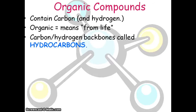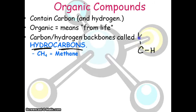Our focus is going to be on specific organic compounds that are important to living things. The backbone of an organic compound is basically called a hydrocarbon — just hydrogen and carbon. The simplest organic compound would be methane, which is nothing more than a carbon surrounded by hydrogens. Based on this, carbon can make four bonds. Carbon has exactly four electrons, so it's going to form covalent compounds and share with other things.